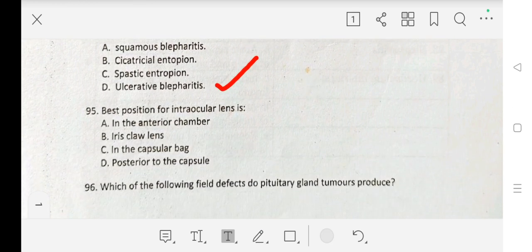Question number 95 is: Best position for intraocular lens is A. in the anterior chamber, B. iris claw lens, C. in the capsular bag, D. posterior to the capsule. Correct answer is C. in the capsular bag.